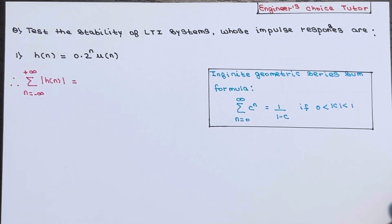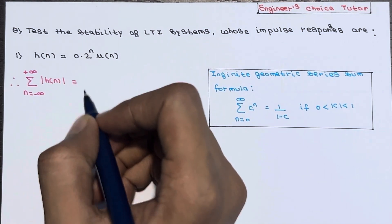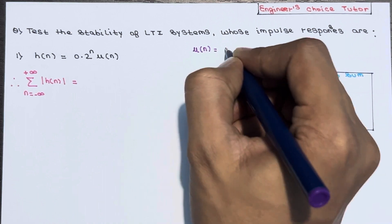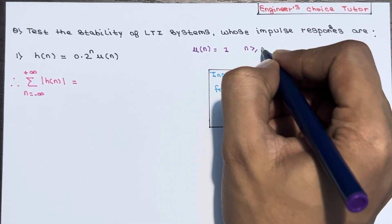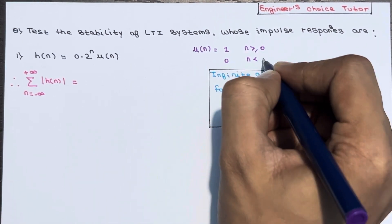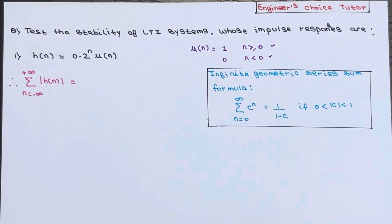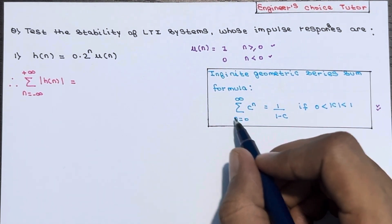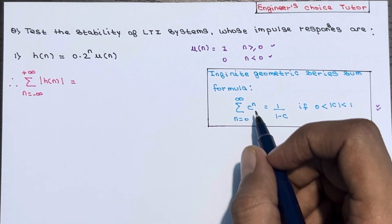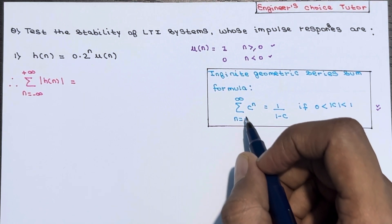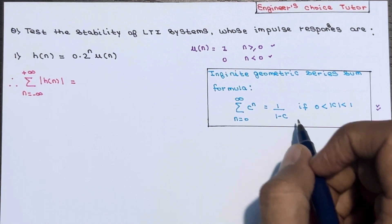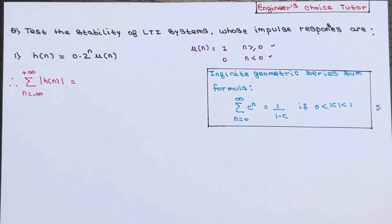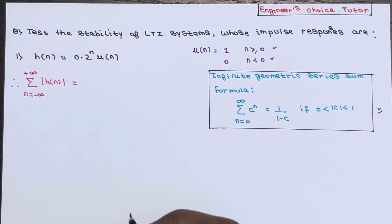The impulse response h(n) is given as 0.2 to the power n into u(n). Now, u(n) is equal to 1 when n is greater than or equal to 0, and 0 when n is smaller than 0. Also keep in mind the infinite geometric series sum formula: summation of c to the power n, over the limit n ranging from 0 to infinity, equals 1 divided by (1 minus c), if mod of c is greater than 0 and smaller than 1. These two concepts are required to solve this question.